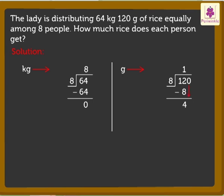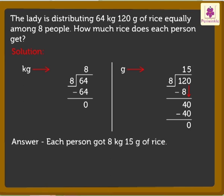Now we bring down the next digit, that is 0, to get the number 40. Now compare the digits. Here, as 40 is greater than 8, we divide. 5 into 8 is equal to 40, so we write 5 in the ones place in the quotient and 40 below the dividend. Thus 40 minus 40 is equal to 0. The quotient is 8 kilograms 15 grams. Thus each person got 8 kilograms 15 grams of rice.